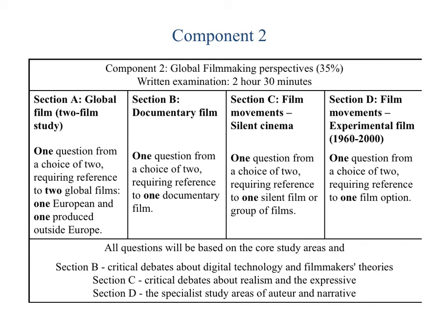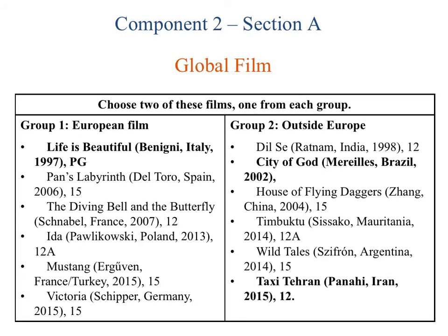You can see here what choices of questions you will get for each section. Component 2, Section A — global film — gives you the opportunity to study one non-English language European film from Group 1, and one non-English language film produced outside of Europe in Group 2.